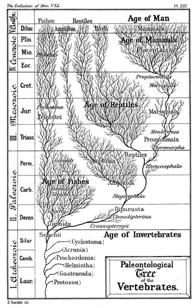Co-evolution is a process in which two or more species influence the evolution of each other. All organisms are influenced by life around them. However, in co-evolution, there is evidence that genetically determined traits in each species directly resulted from the interaction between the two organisms.